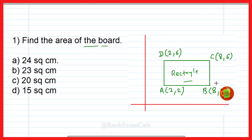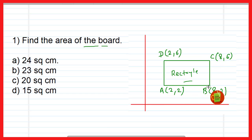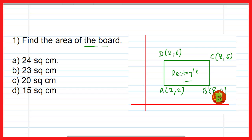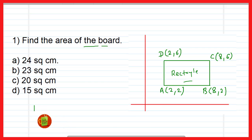Friends, to find the area of the rectangle we need length and breadth, because area of rectangle is equal to length into breadth. So first we will find the length, that is the AB distance, and then we will find the BC distance, that is the breadth, and then we can calculate length into breadth, that is the area of the rectangle. So first we will find the AB distance.